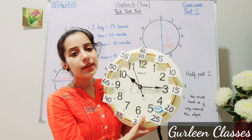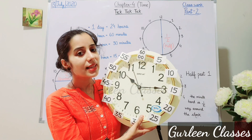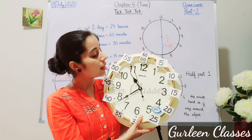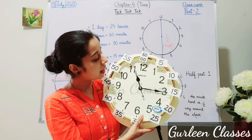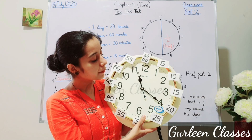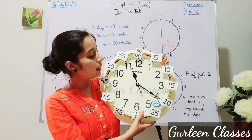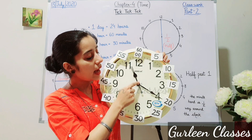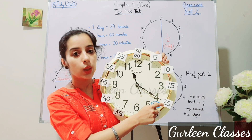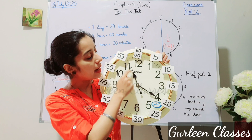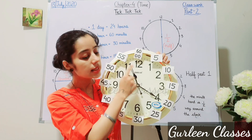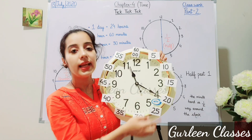Let me give you another example. The minute hand is at 4. Counting by fives: 5, 10, 15, 20 — so 20 is the minute. And 11 is the hour. The time is 11 hours and 20 minutes.